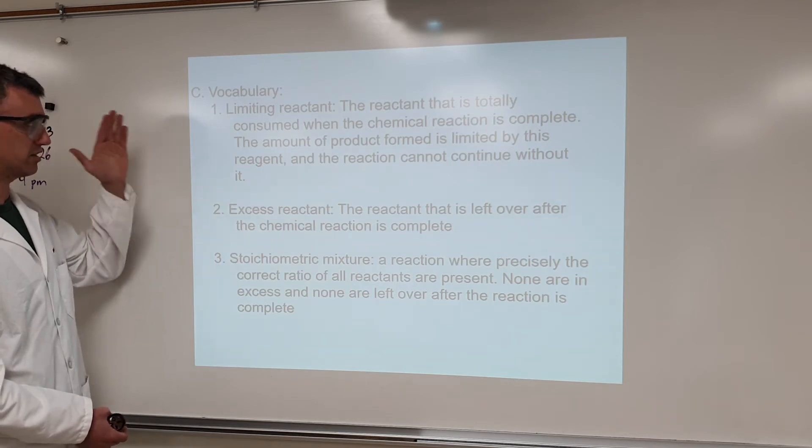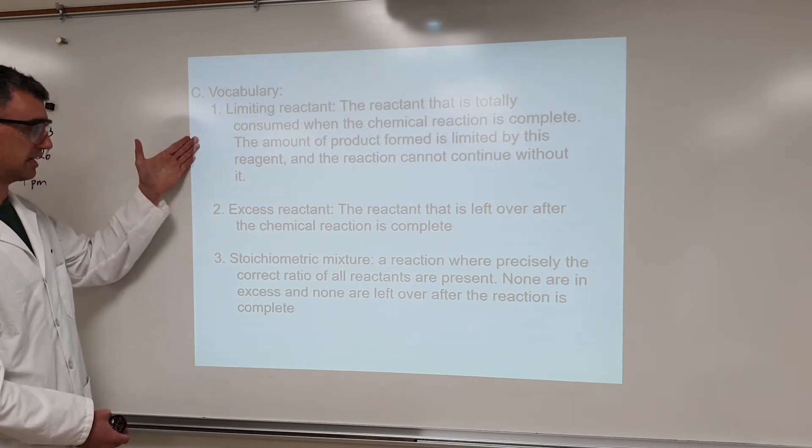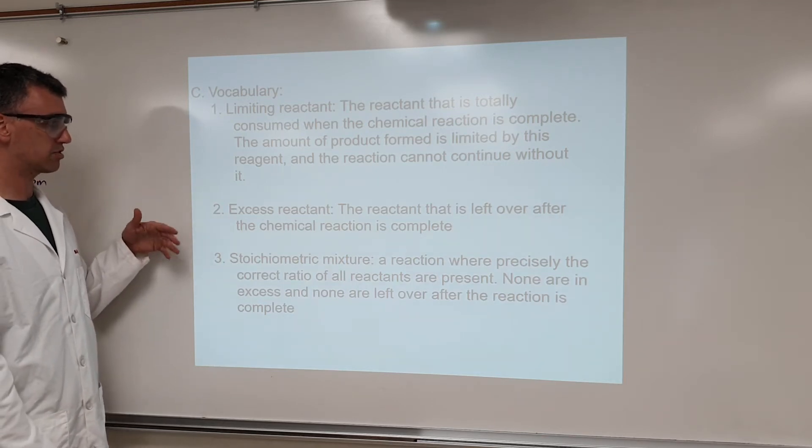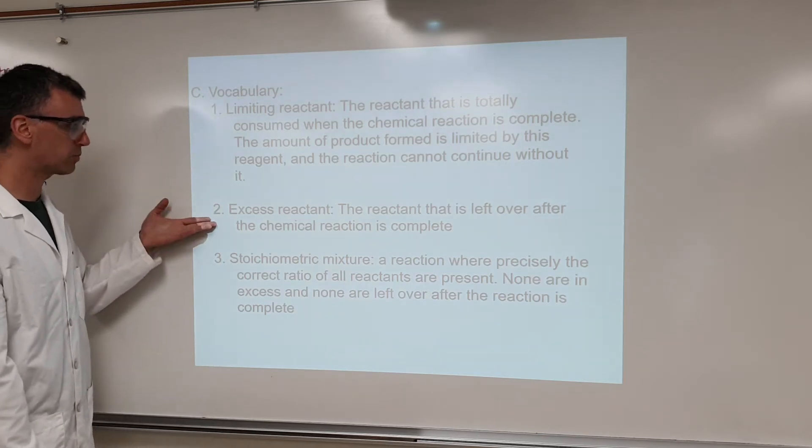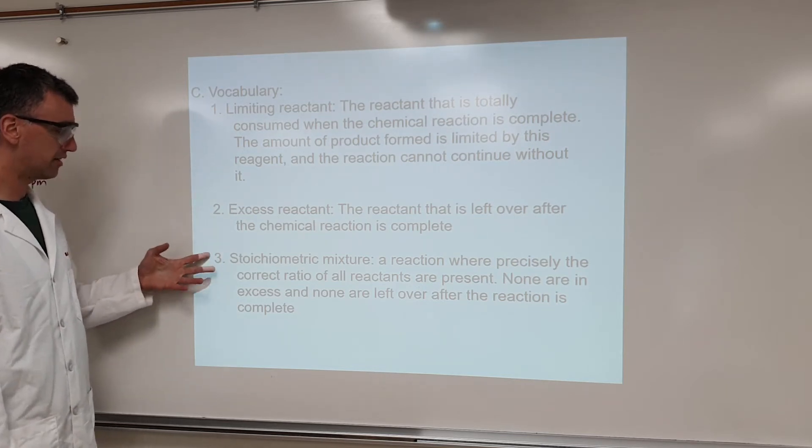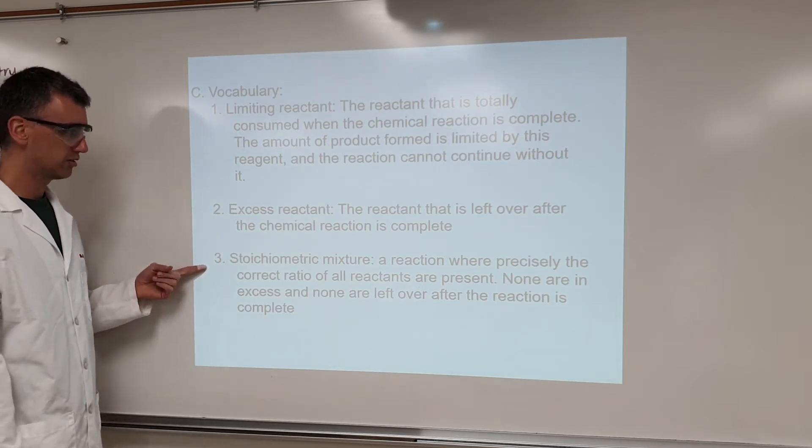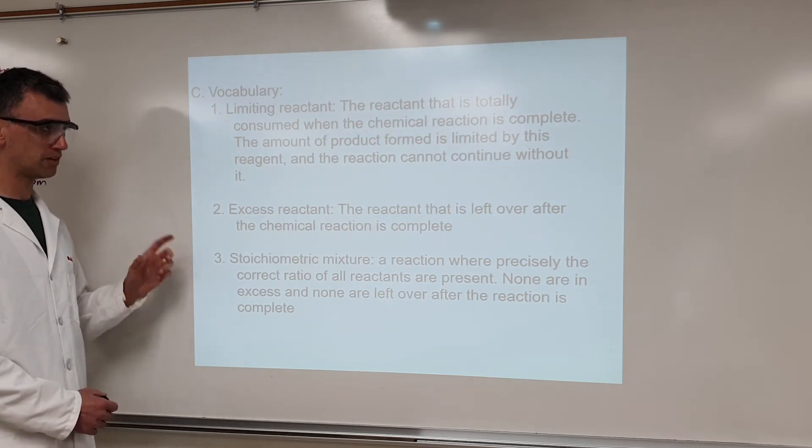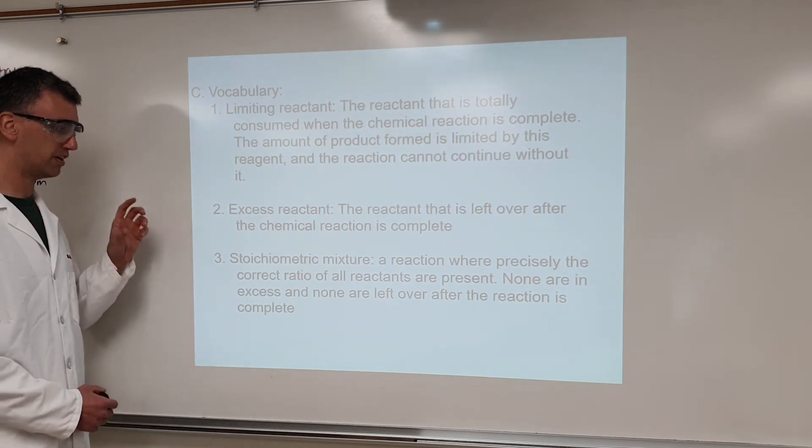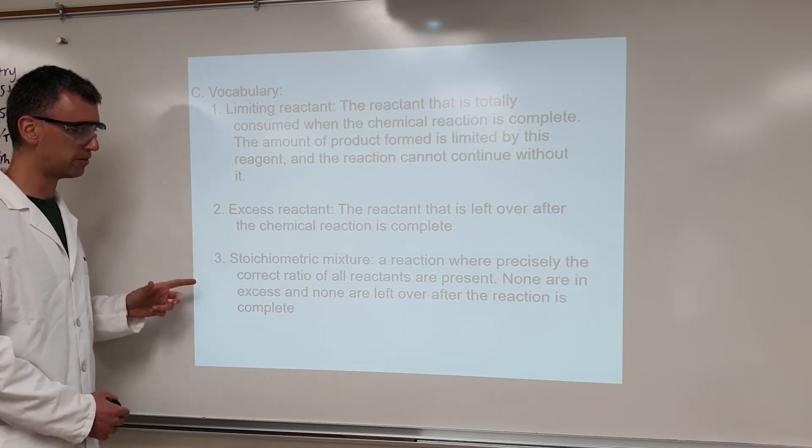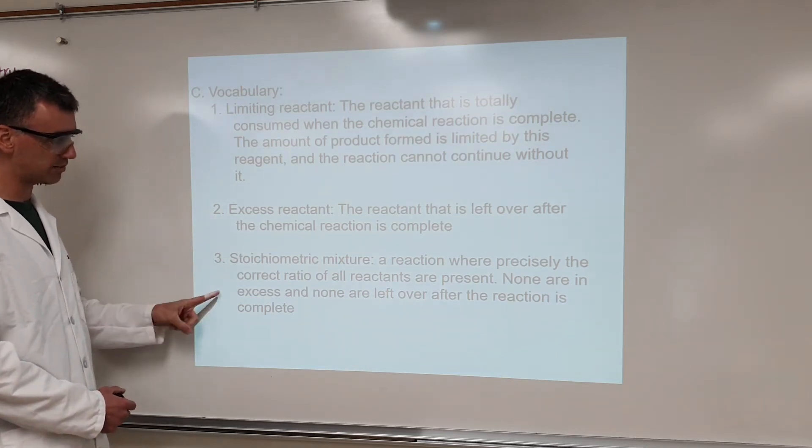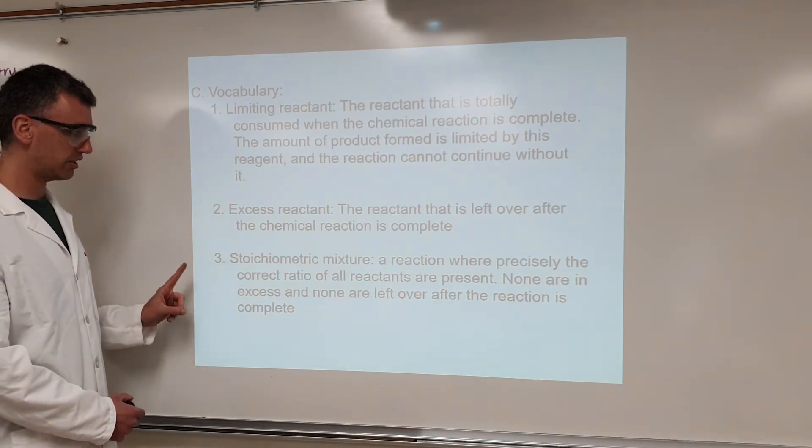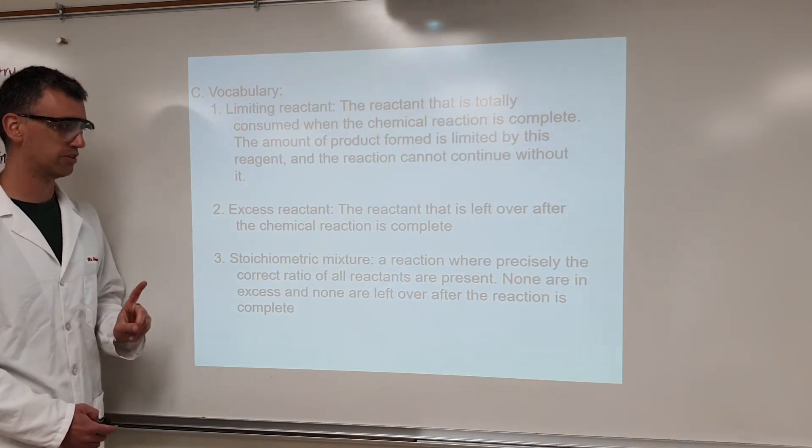Because again, limiting reactant is whatever is completely consumed and runs out. Excess reactant is what's left over, and that means it's capable of forming more product than the limiting reactant. And then stoichiometric mixture, as it says here, is that carefully calculated mixture. It's hard to do in real life, but if you're careful with your calculations and careful with your weighing, you can get just the exact right amount of each reactant so that nothing is left over. That takes some calculation and some careful measurement, but it is possible to do.